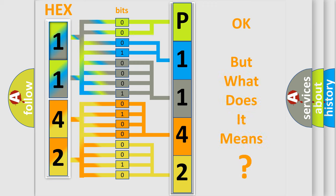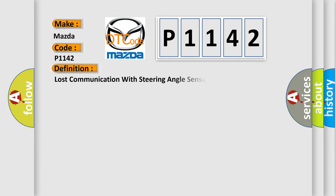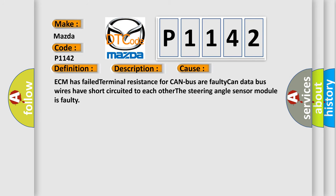We now know in what way the diagnostic tool translates the received information into a more comprehensible format. So, what does the diagnostic trouble code P1142 interpret specifically for Mazda? The basic definition is: Lost communication with steering angle sensor module. With the key on, the ECM detected that it has lost communication with the steering angle sensor. During its initial startup, the engine control module (ECM) communicates with all control modules via a CAN bus. This diagnostic error occurs most often in these cases: failed terminal resistance for the CAN bus, faulty CAN data bus wires short-circuited to each other, or the steering angle sensor module is faulty.